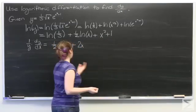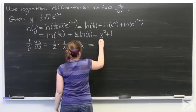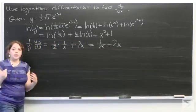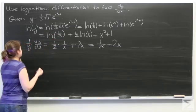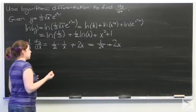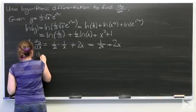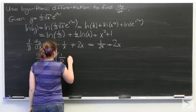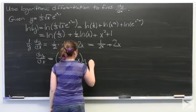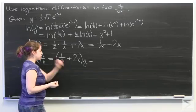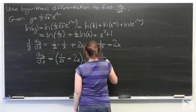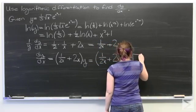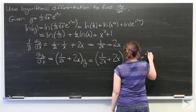Plus the derivative of x squared is two x, and the derivative of one is zero. So we can rewrite this as one over two x plus two x. Last but not least, we're looking for dy/dx. We multiply both sides by y, so dy/dx is therefore equal to the quantity of one over two x plus two x, times y. And substituting back, it's equal to one over two x plus two x, times one third times the square root of x times e to the x squared plus one.